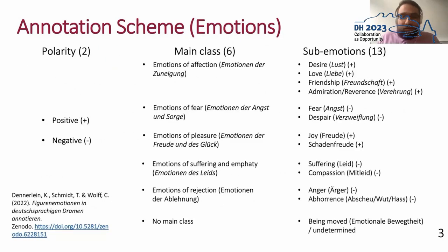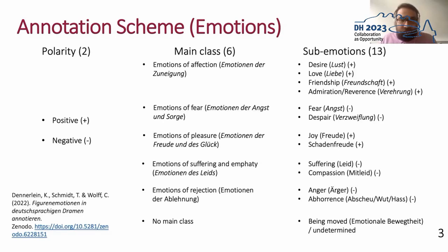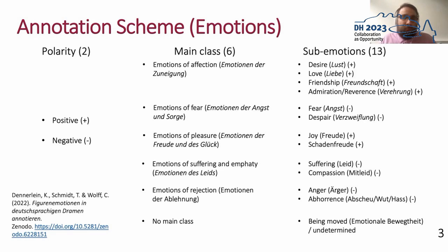First, we will take a look at the annotation scheme according to which we annotate. Overall, we define emotion as a generic term for a character's state of mind that is expressed through written language. The scheme is structured in a hierarchical sense consisting of certain sub-emotions, which are finally the emotions we use to annotate. These emotions sum up to six main classes — more precisely four classes and two special cases — and on the highest level all sub-emotions can be summed up to polarity, meaning if an emotion is rather positive or negative.